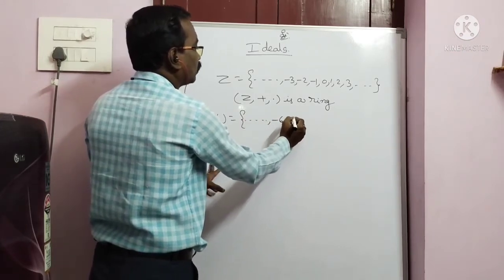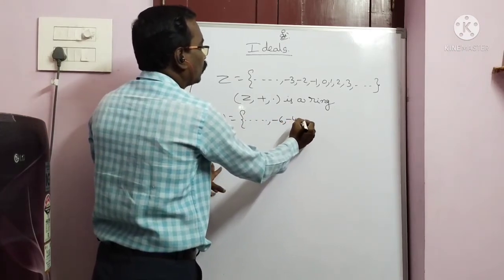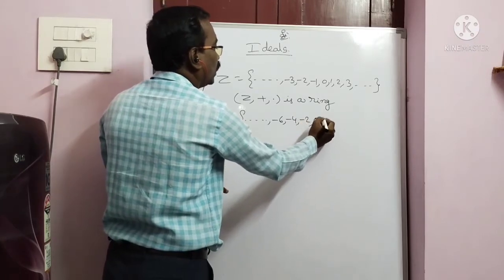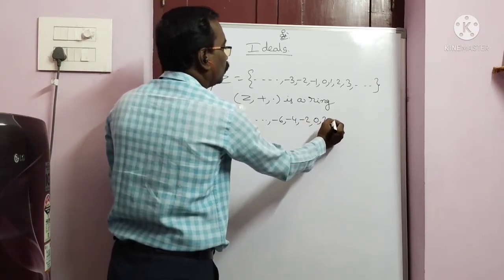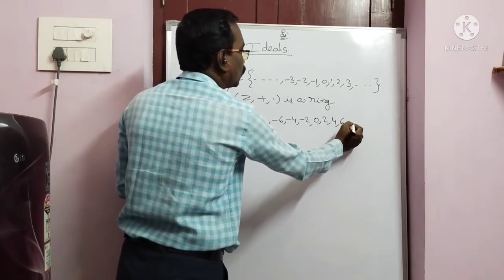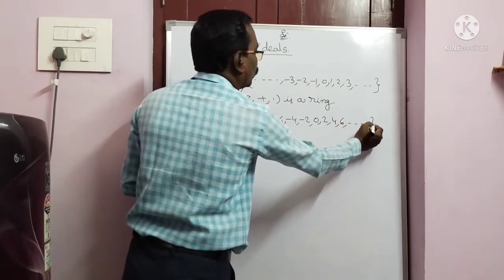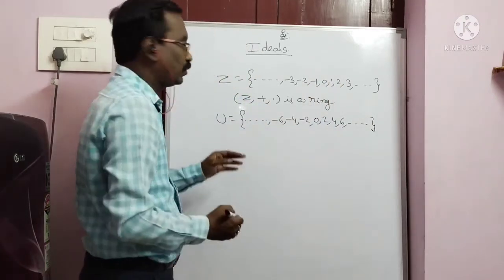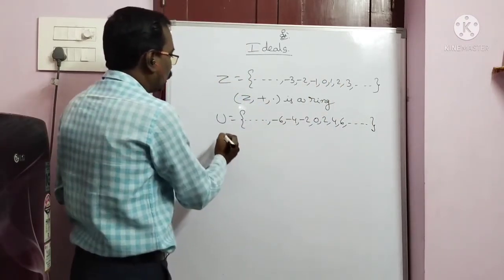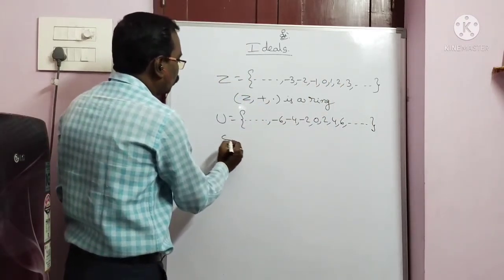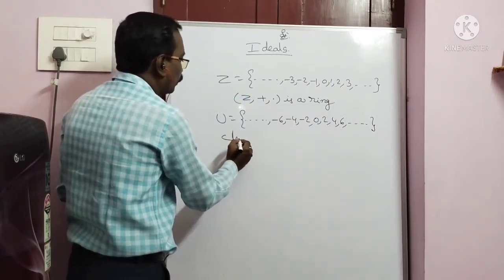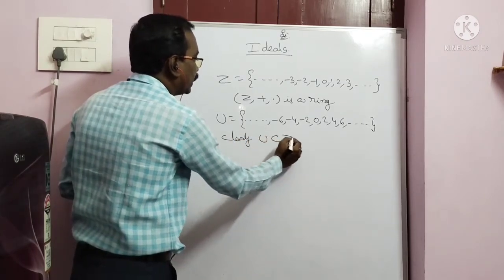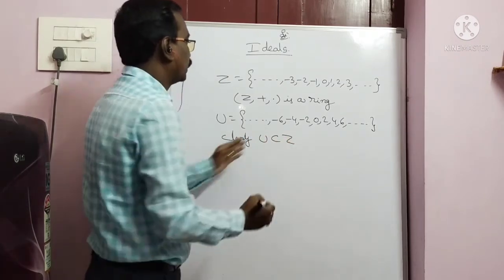The set is: minus 6, minus 4, minus 2, 0, 2, 4, 6. Now, clearly U and A is a subset.